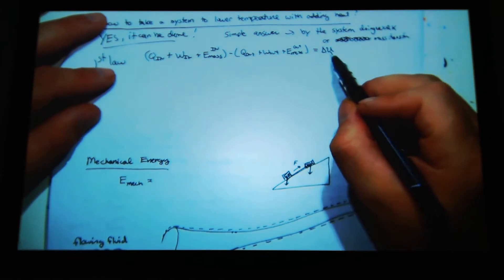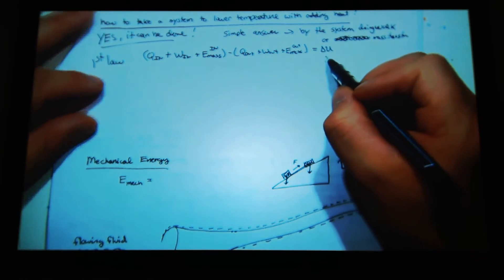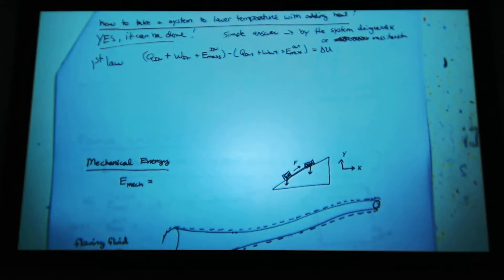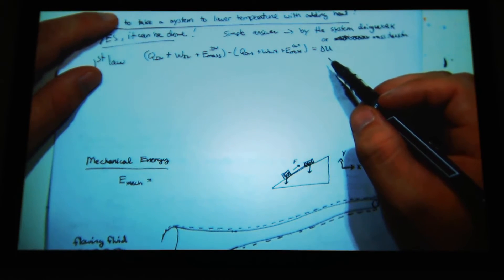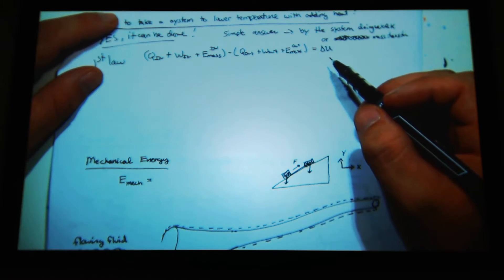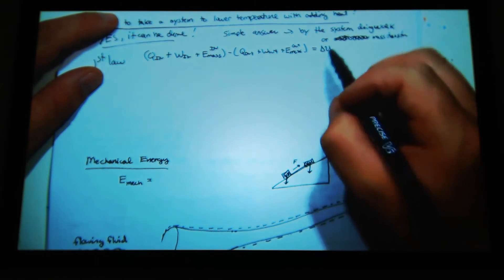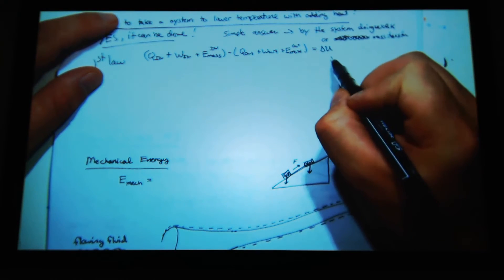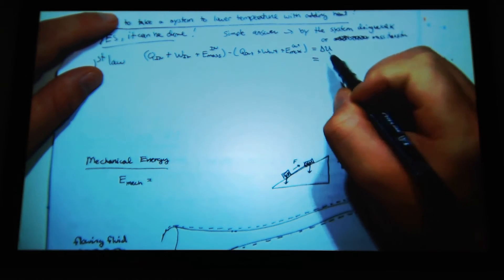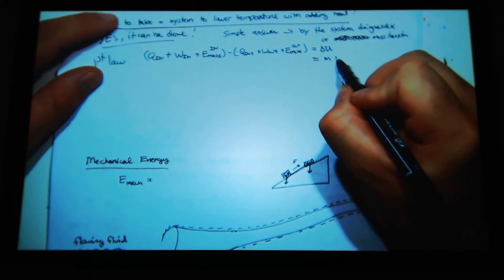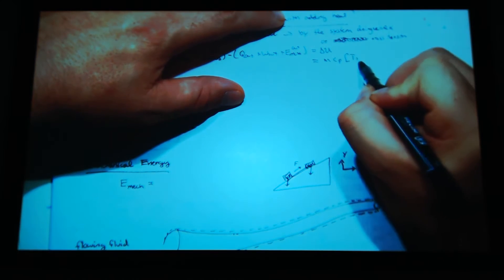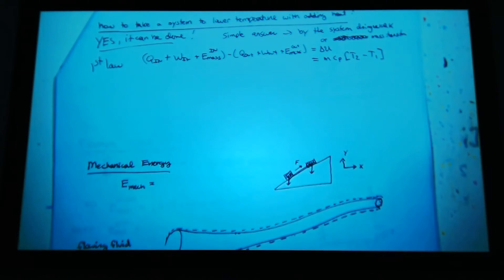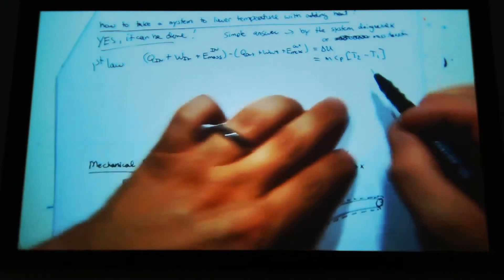And so this internal energy in my system, I can relate that to the heat capacity and the change in temperature. So if you remember sensible heat or sensible energy, I can write that as the mass of my system times its heat capacity times its change in temperature.